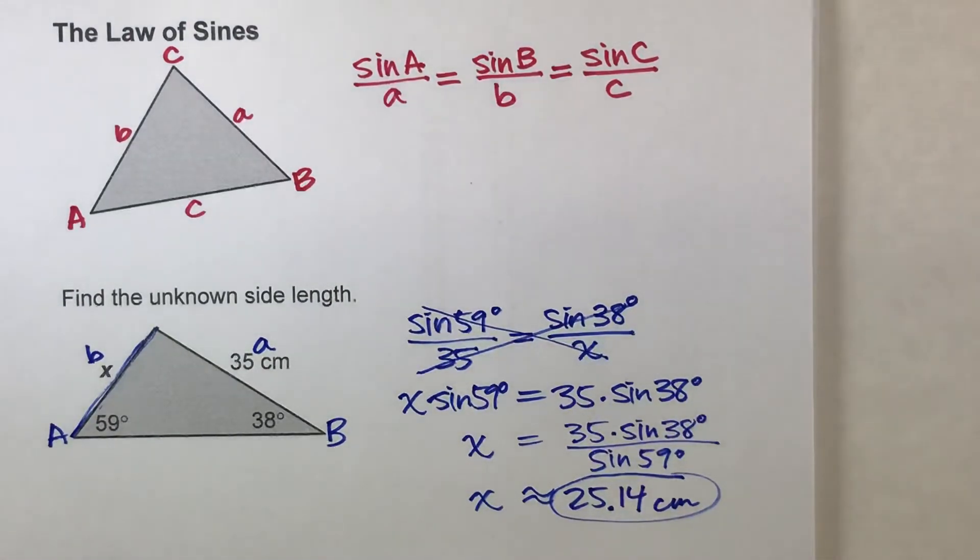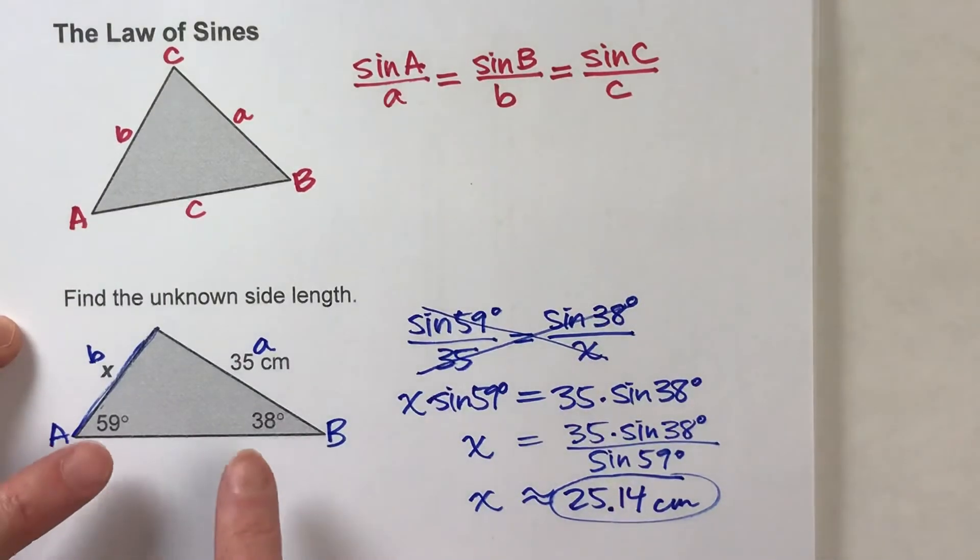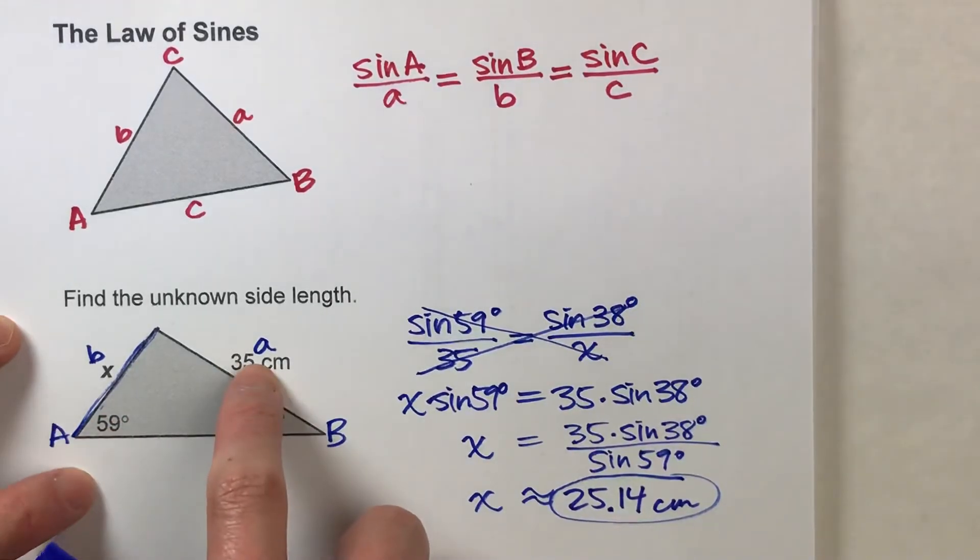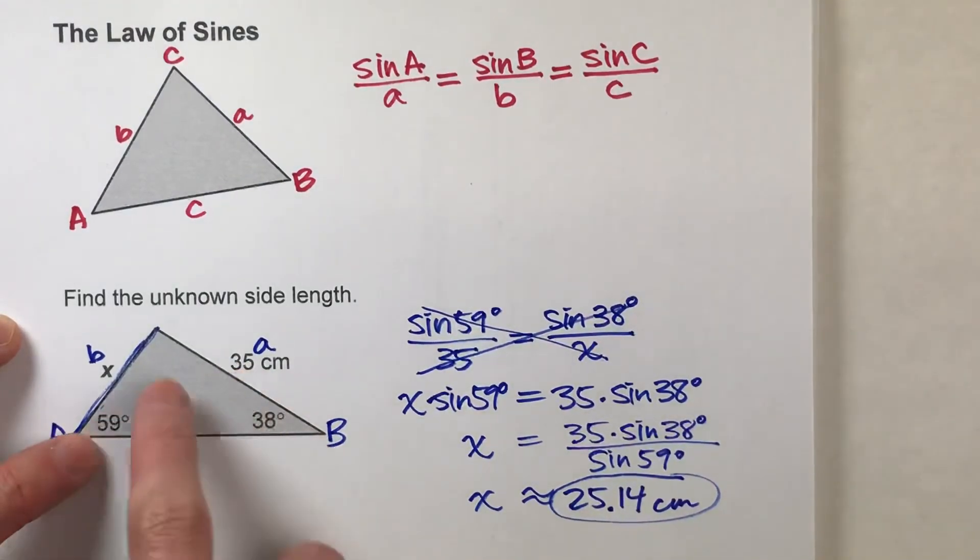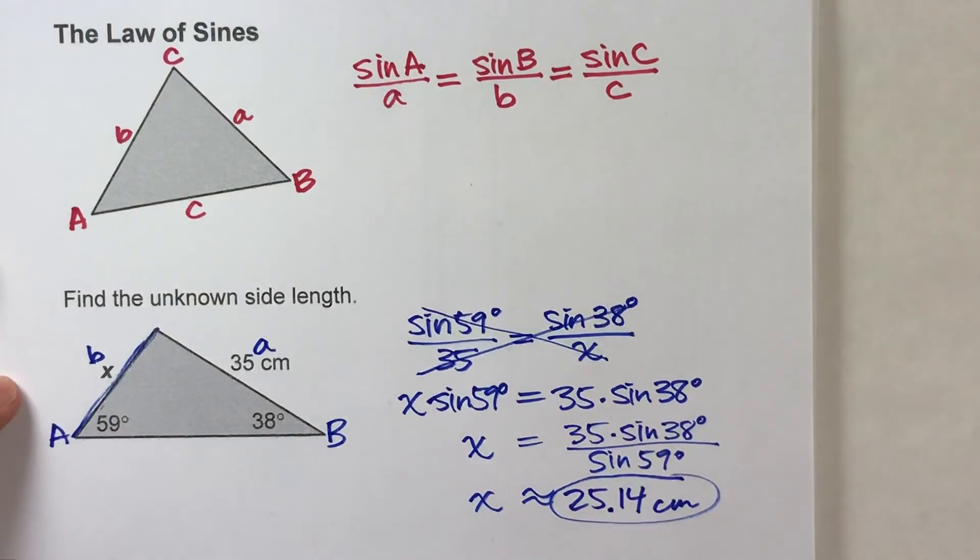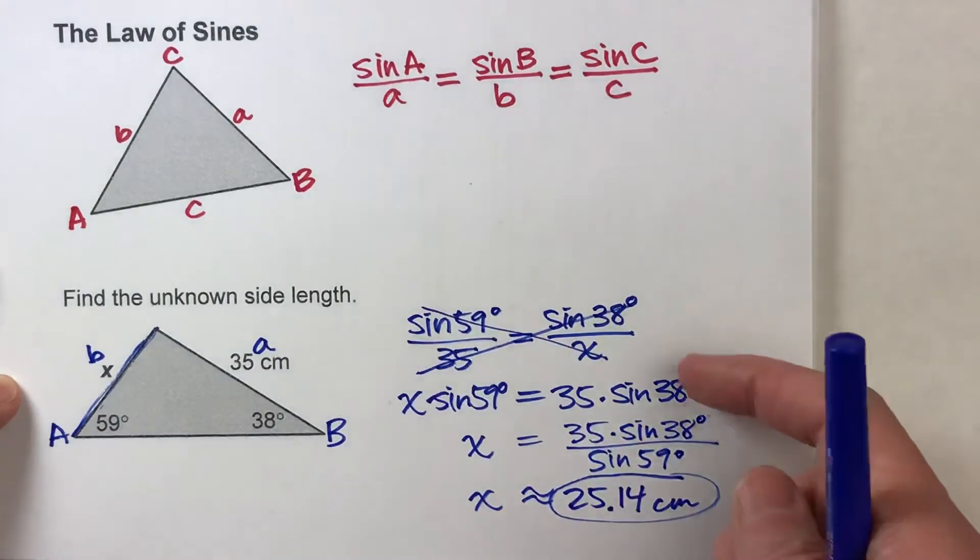So the key with the law of sines is, make sure you have those three pieces of information you're looking for. Two angles, and at least you need to find one side, you need to be given one side that's across from the angle, and we need to be finding the side across from the other angle. Set up your equation, and then you can solve it.